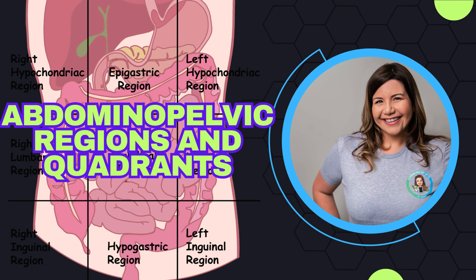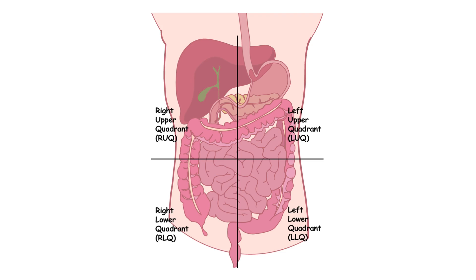Clinicians often divide the abdominal pelvic cavity into four quadrants using two imaginary lines that intersect at the umbilicus, or belly button. There is a vertical line through the midline and a horizontal line at the level of the navel.